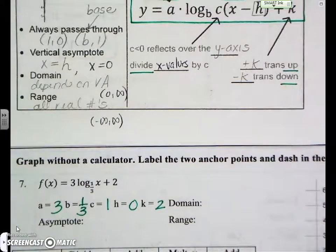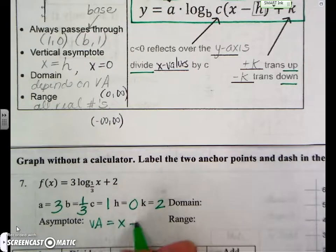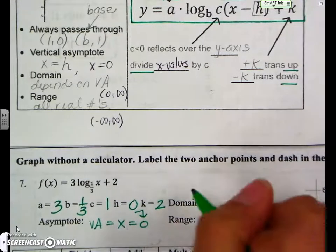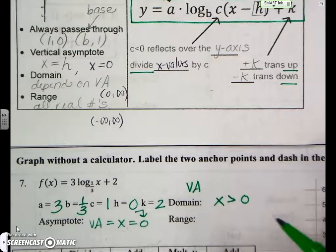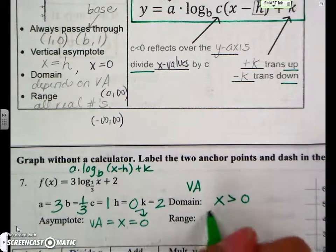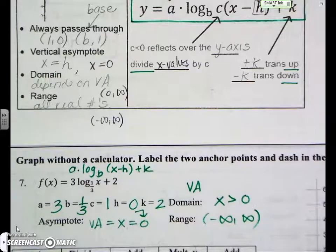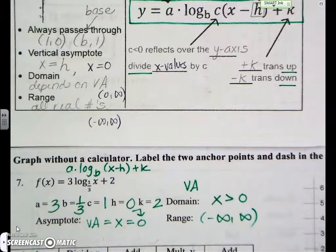Your asymptote is always dependent on your H value, which in this case is 0. So that means your domain is the vertical asymptote, which is x greater than 0. Range? It's always going to be negative infinity to positive infinity. If you are in any period other than 3rd and 7th, this is what I expect you to be able to do. If you're in 3rd and 7th period, then I expect you to know how to do the box.